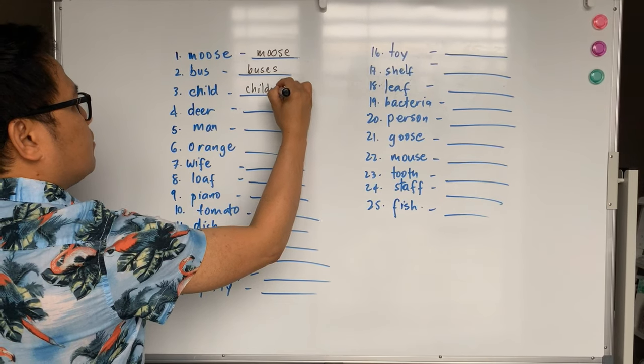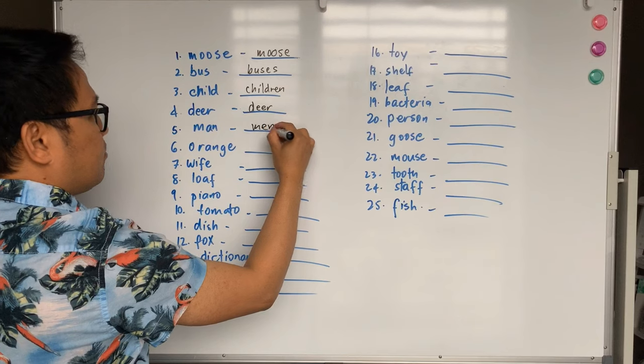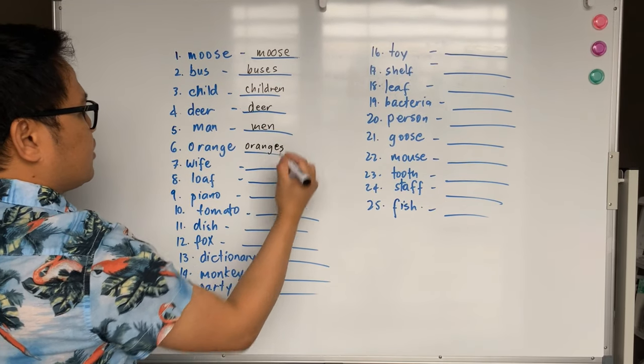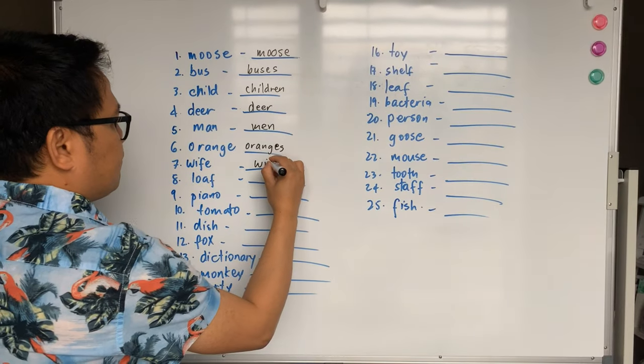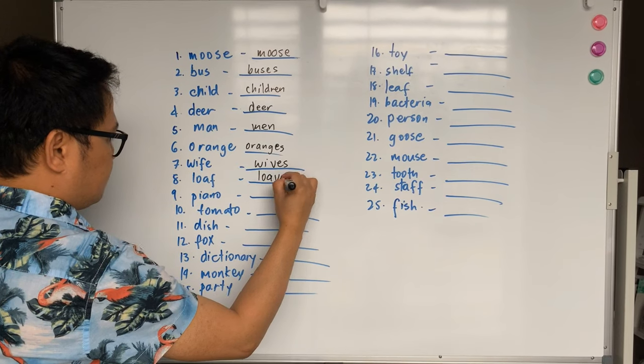Child will become children. Deer is the same. Man will become men. Orange will become oranges. Wife will become wives. Loaf becomes loaves.